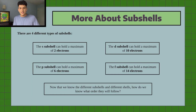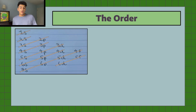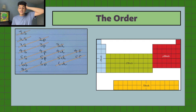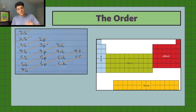Moving on to the specific order of subshells in electron configuration, there are two main approaches. The first is for beginners: a diagram with all the different subshells and arrows drawn through them representing the order in which you fill them. You start by completely filling the 1s subshell, then move to 2s, then 2p, then 3s, then 3p, and so on. Just follow the arrows and you'll correctly fill out the subshells in the right order.